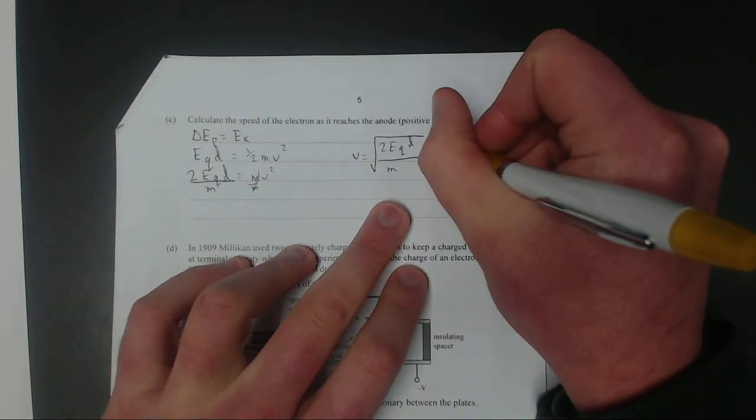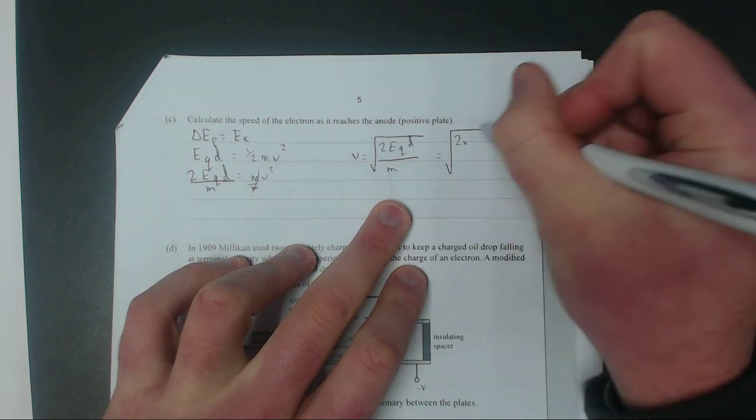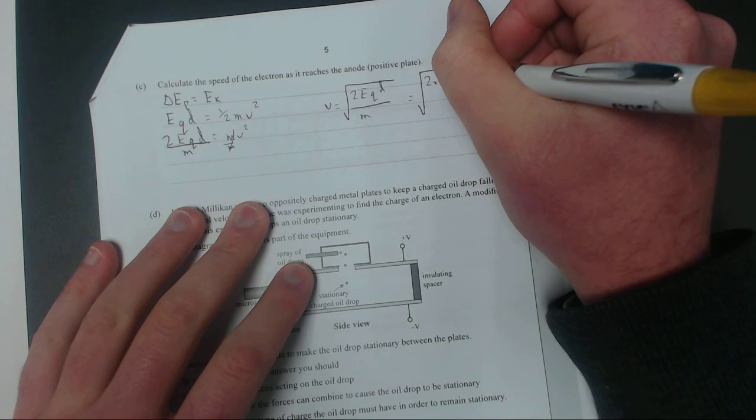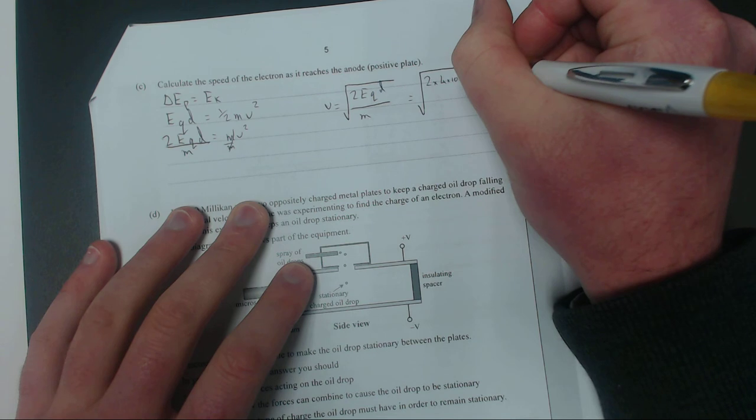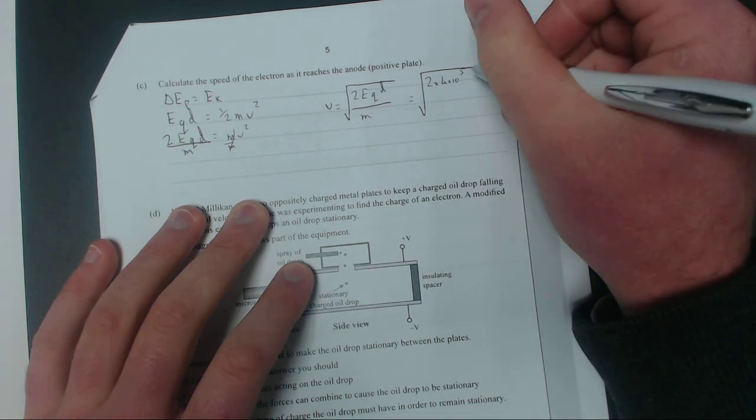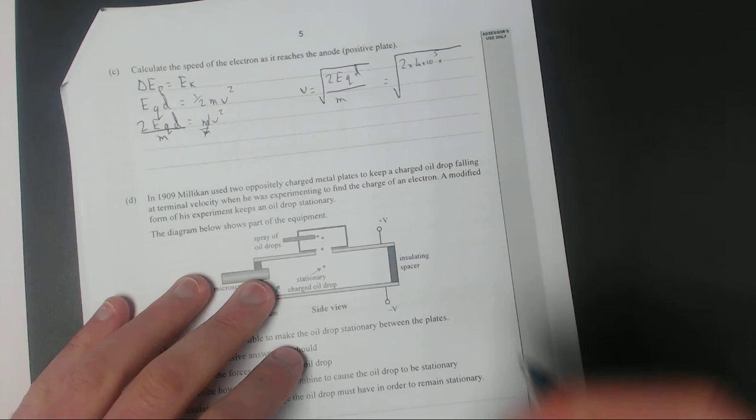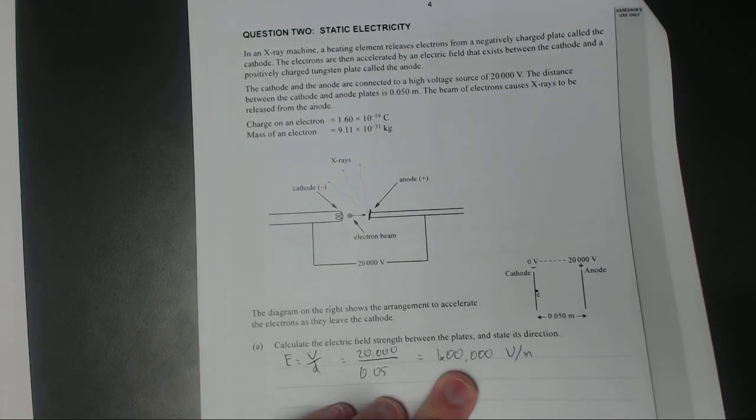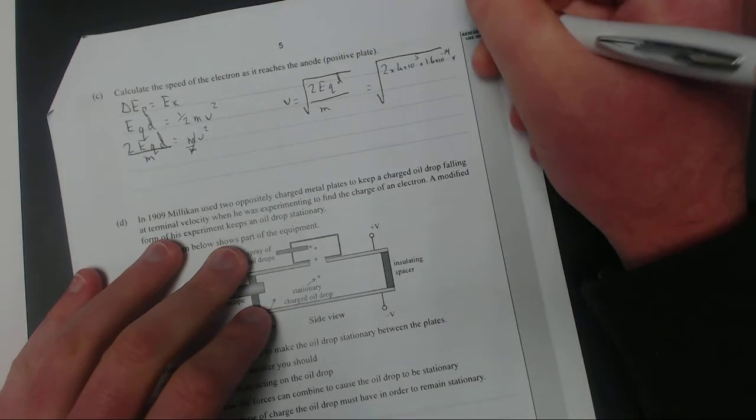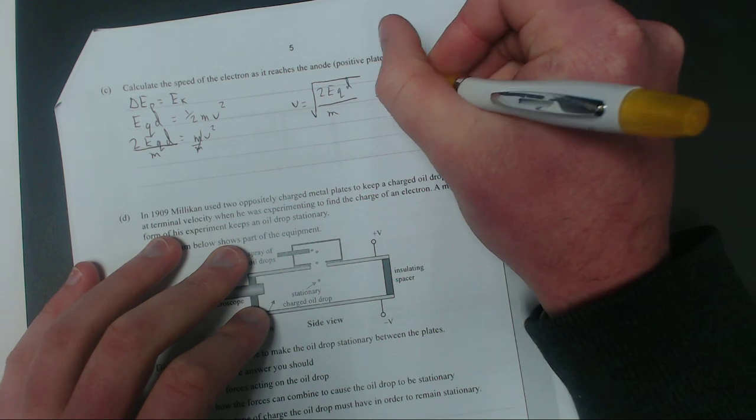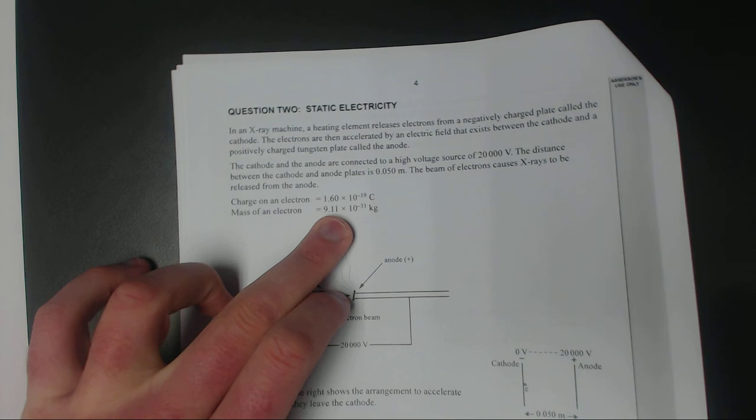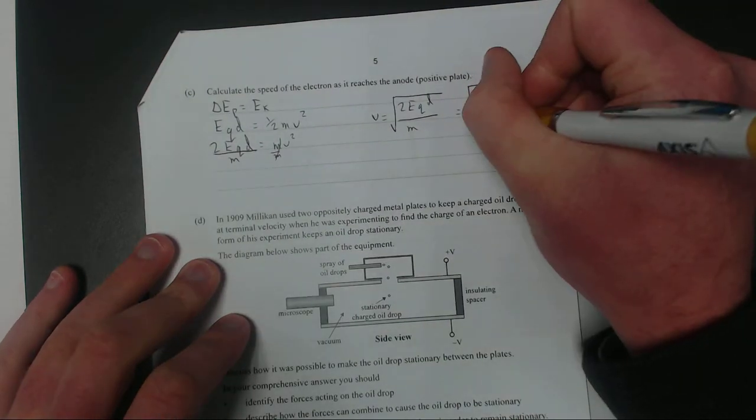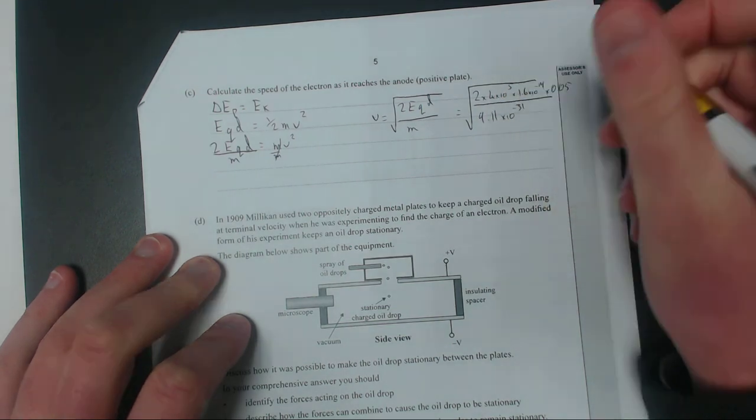I might as well put some numbers in just so it's easier to follow. 2 is obviously just 2. Electric field is 400,000 volts per meter. I'm going to make that 4 times 10 to the 5, because there are 5 zeros. Times the charge on the electron which is 1.6 times 10 to the negative 19. Times the distance which is 0.05, always got to make sure it's in meters. Divided by the mass of the electron which is 9.11 times 10 to the negative 31 kg.